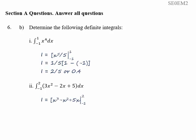We put in the upper value to get eight minus four plus ten, then subtract the lower value, which is minus one minus one minus five. That gives us fourteen minus minus seven, which is twenty-one.